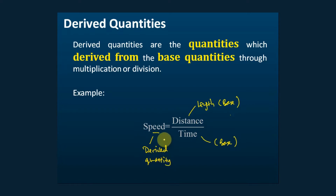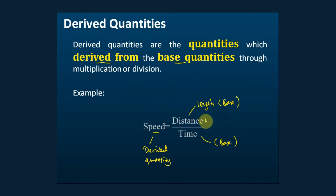So what are derived quantities? Derived quantities are quantities which are derived from base quantities. Distance and time are the base quantities. Speed is derived from distance and time, and therefore speed is called a derived quantity.